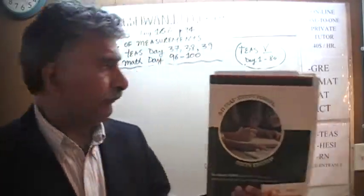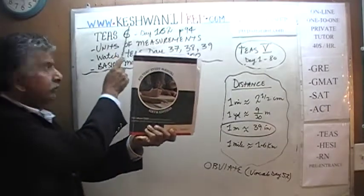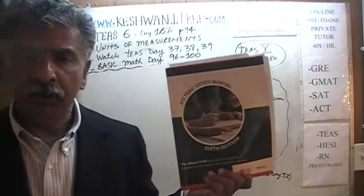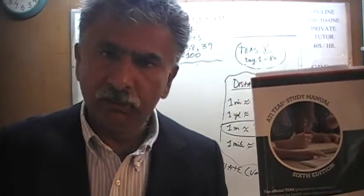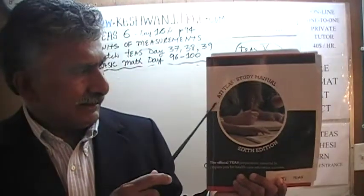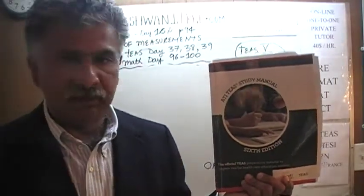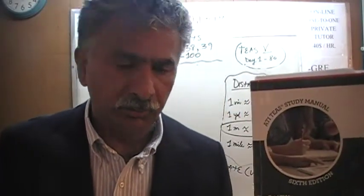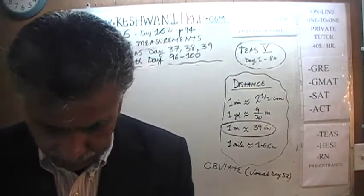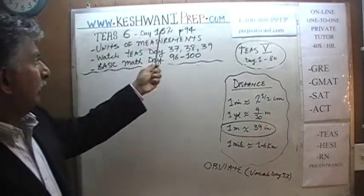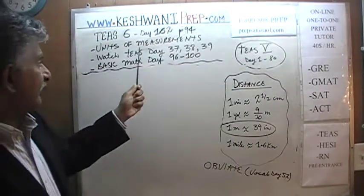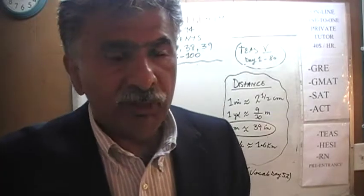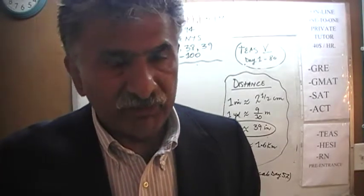Hello, my name is Keshwani — K-E-S-H-W-A-N-I. We are here to prepare for the TEAS. We have been solving math problems out of the ATI TEAS study manual, sixth edition. If you do not own this book already, purchase one immediately. Today is lesson number 162, and we are on page 94, dealing with the concept of units of measurements — how to convert metric units to English units and vice versa.